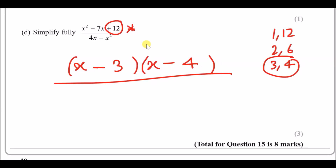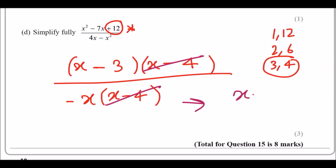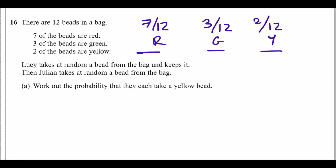For the bottom half, to factorise 4x - x², both terms have an x in common, so we take out x, leaving x(4 - x). Now we have (x - 4) on the top and (4 - x) on the bottom. There's a little trick: if you factorise a negative sign from (4 - x), it becomes -(x - 4). So the bottom is -x(x - 4), the (x - 4) factors cancel, and you're left with (x - 3) / (-x).